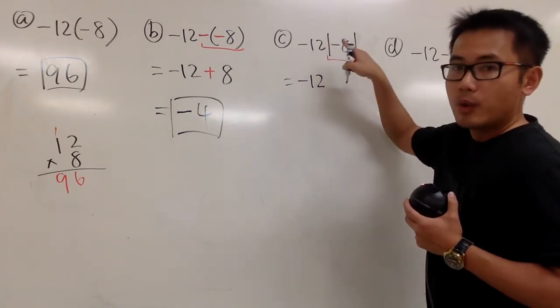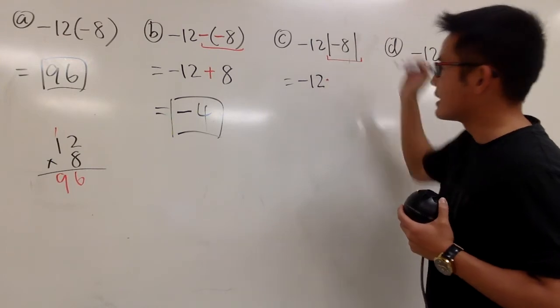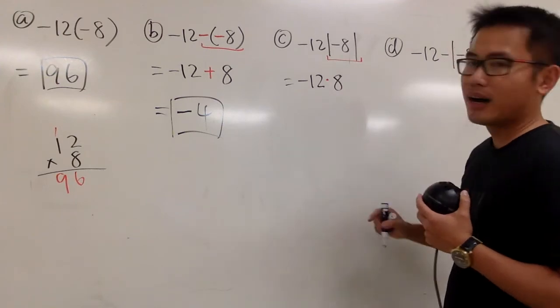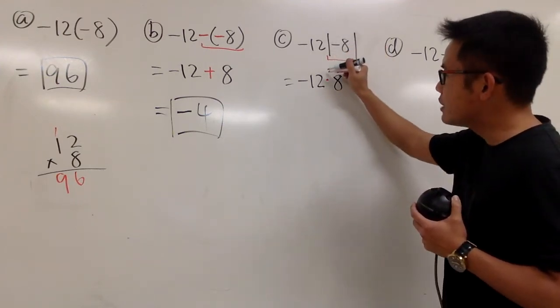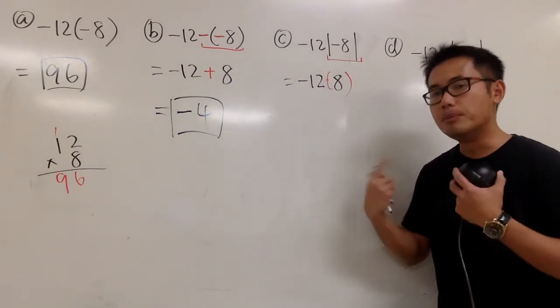Remember, we are going to multiply when there's no operation in between, right? So I'll put a dot like this. Absolute value of negative 8 is just a positive 8 now. That's what the absolute value is doing. Sometimes you can also put a parenthesis like this, because that's another way to show multiplication.